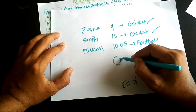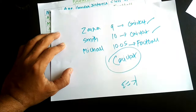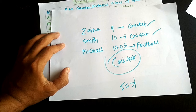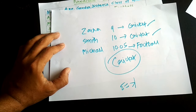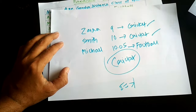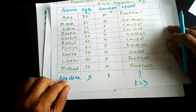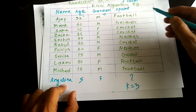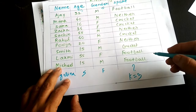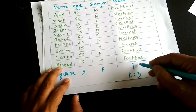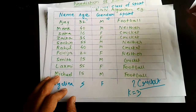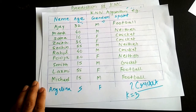Since cricket is the most common class among the three nearest neighbors, KNN predicts that Angelina likes cricket. That's how the KNN algorithm works — it classifies data based on reference data that already has known group labels. Using K equal to 3, Angelina is placed in the group of people who like cricket.